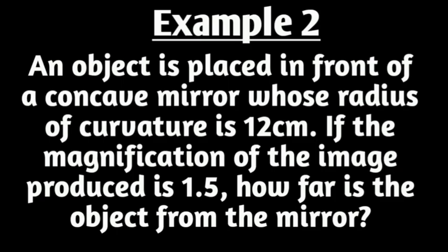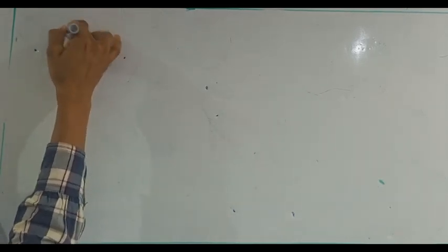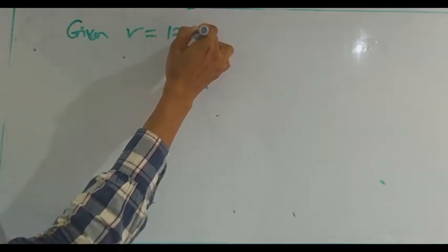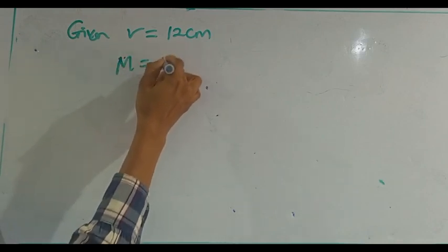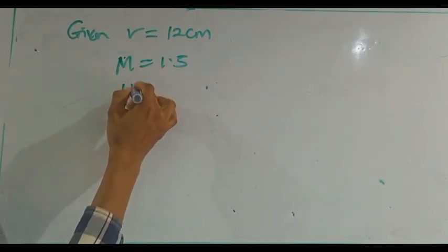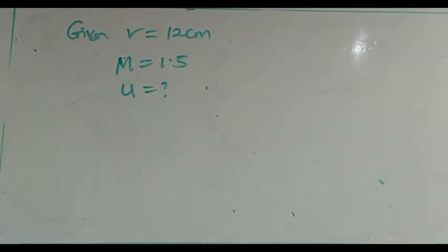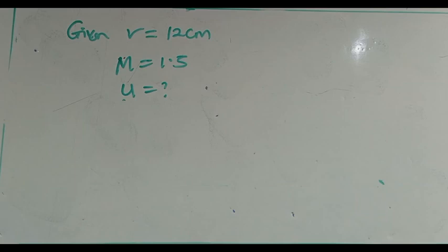Example 2: An object is placed in front of a concave mirror whose radius of curvature is 12 cm. If the magnification of the image produced is 1.5, how far is the object from the mirror? We are given r = 12 cm and magnification m = 1.5. We are looking for the object distance u.